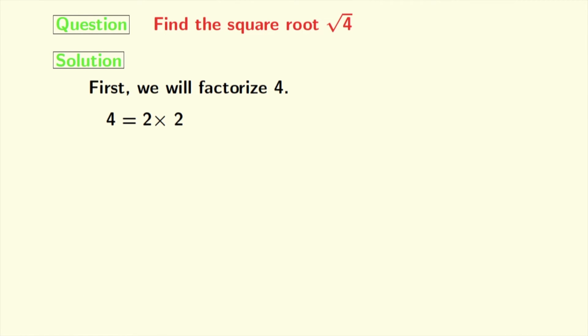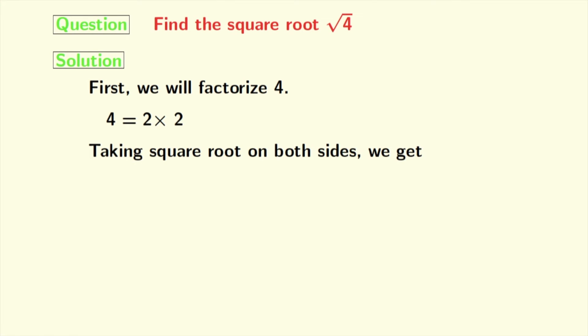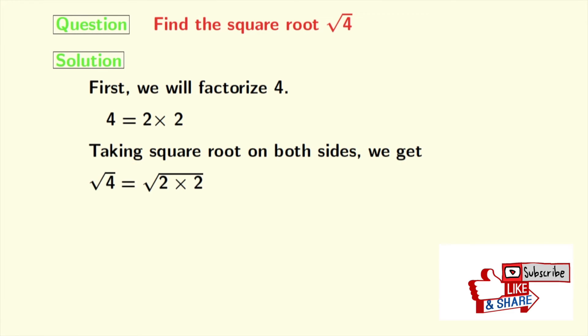Now, taking square root on both sides we get square root of 4 is equal to square root of 2 times 2.